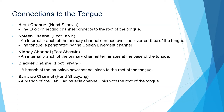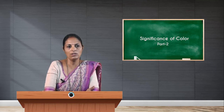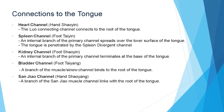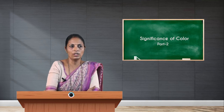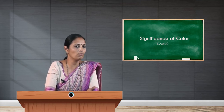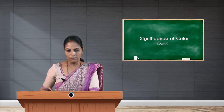The bladder channel, also known as foot tai yang, has a branch of the muscles or tendons channel that binds to the root of the tongue. The san jiao channel, otherwise known as triple warmer, has a branch of the san jiao muscle channel that links to the root of the tongue. In total, the heart, spleen, kidney, bladder, and san jiao channels are connected to different parts of the tongue.